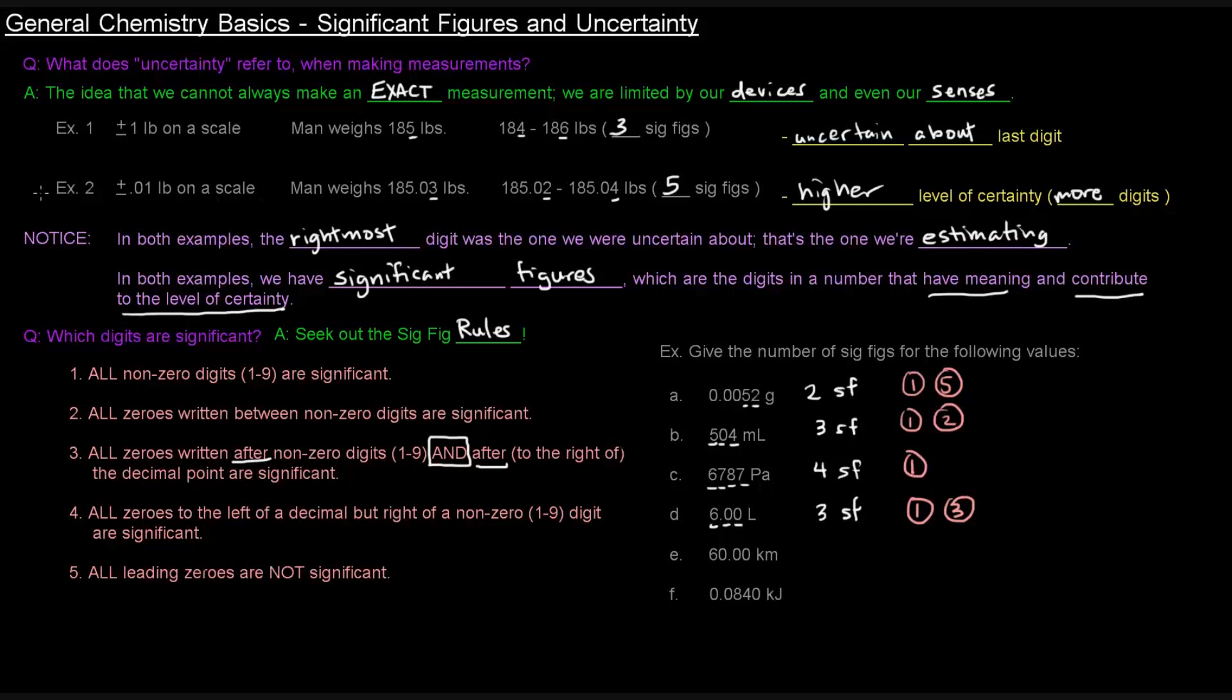E, 60.00 kilometers. That's pretty much the same thing as D. We've got the number, the six is definitely significant. The zeros that are written after non-zero digits and to the right of the decimal point, that's these two, those are significant. And then all zeros to the left of the decimal but right of a non-zero digit are significant.